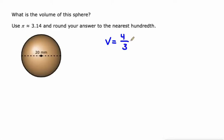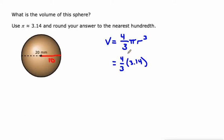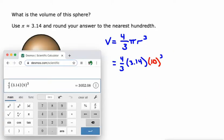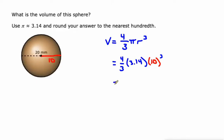Four thirds pi r cubed. So the four thirds we're gonna use four thirds, obviously pi we're gonna use 3.14. And what should we use for radius this time? That's the question. The diameter is 20, so the radius is actually 10. So 10 cubed, or a thousand. We can just go back and change this 9 to a 10, and there we go — 4186.67 when we round to the nearest hundredth. That is cubic millimeters this time.